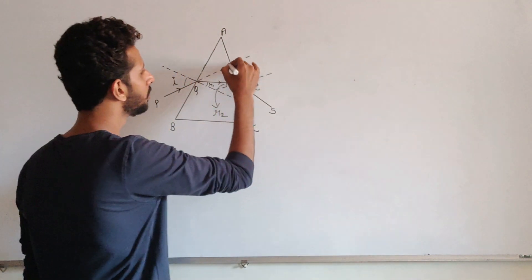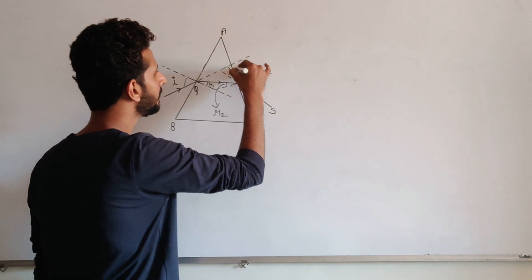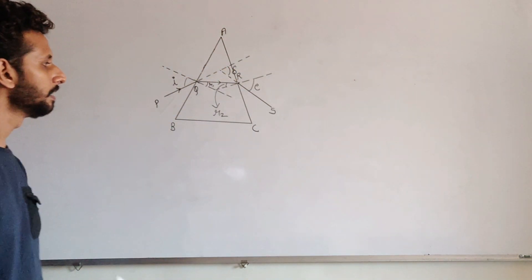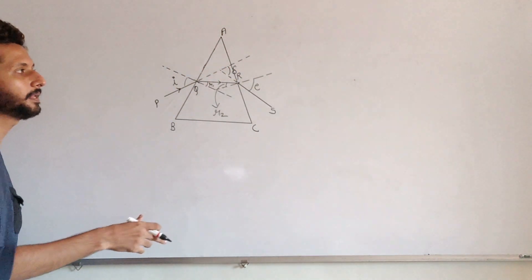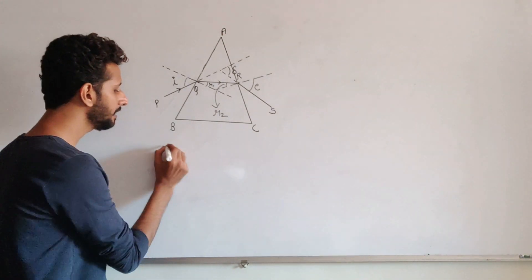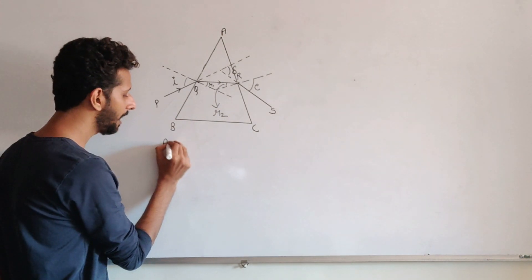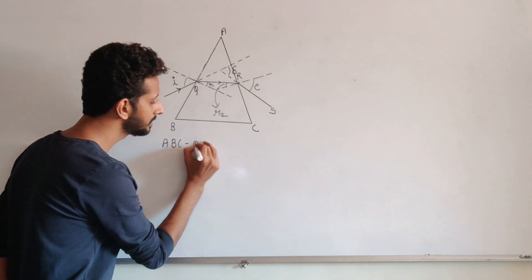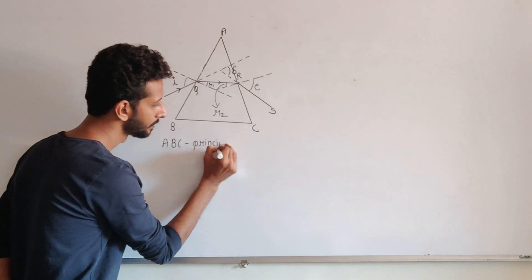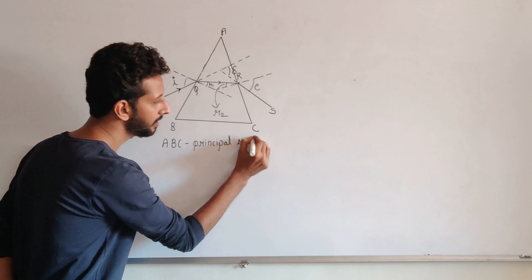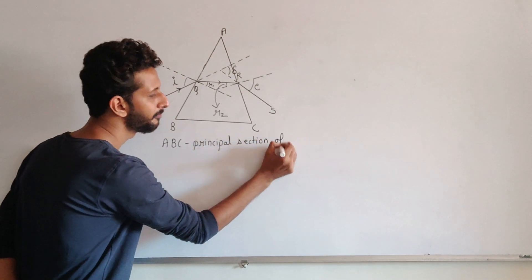And also, the angle of deviation delta. This is how the marking should happen. And once the marking is done, you will mark over here ABC as the principal section of prism.